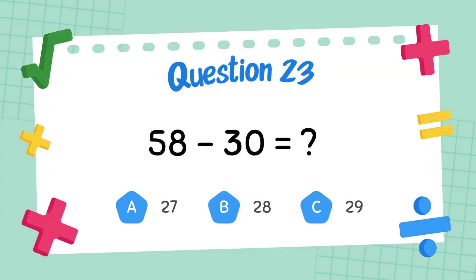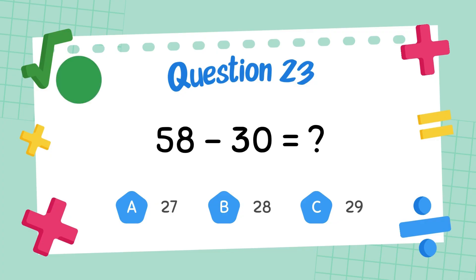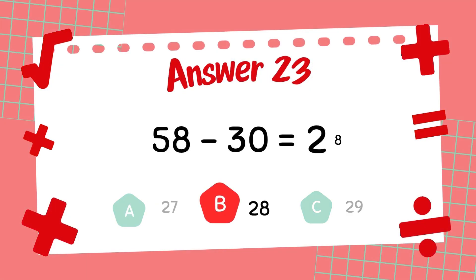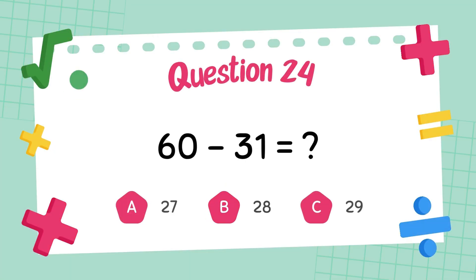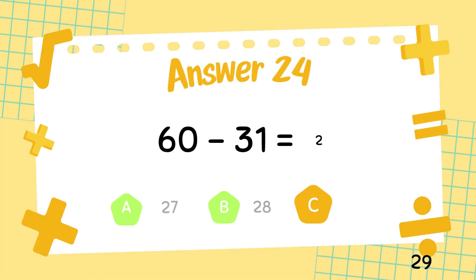What is 58 minus 30? The answer is 28. What is 60 minus 31? The answer is 21.